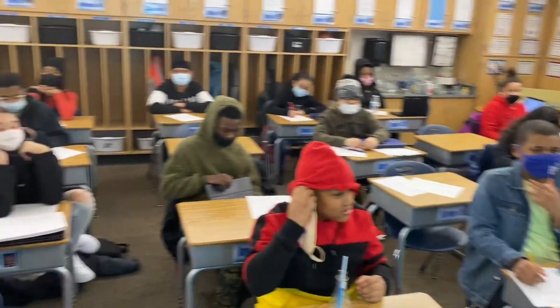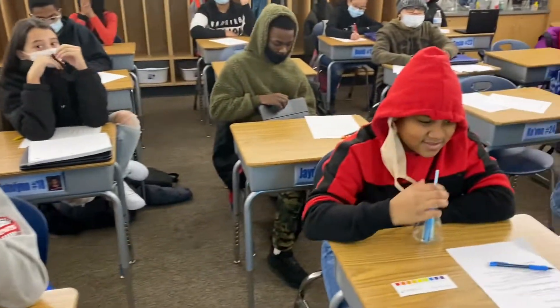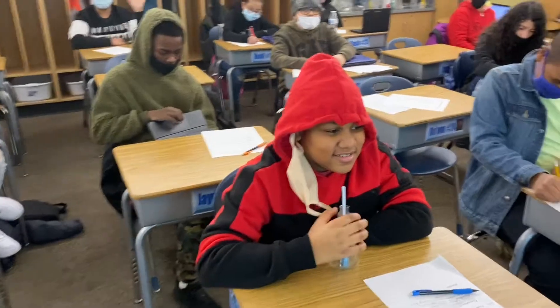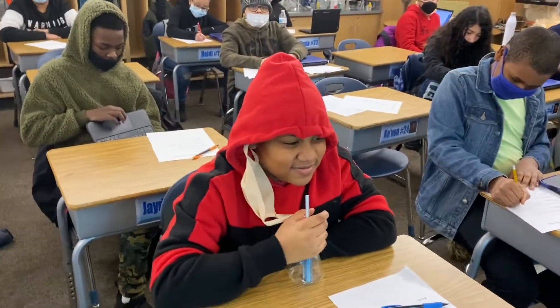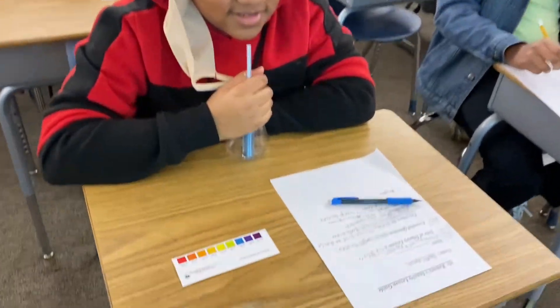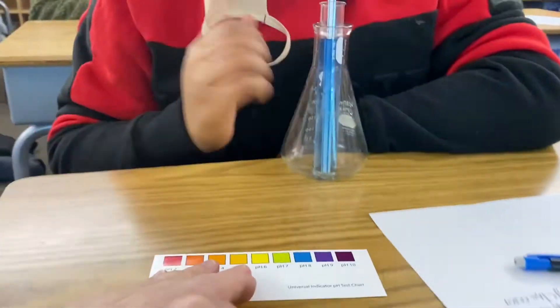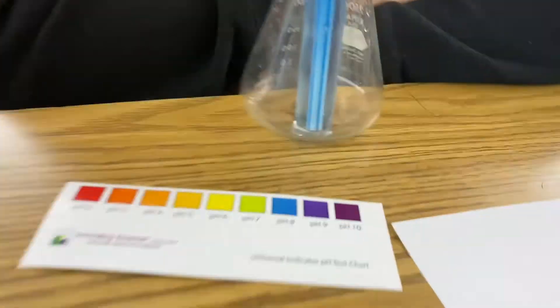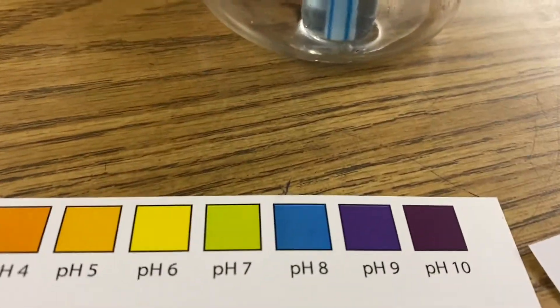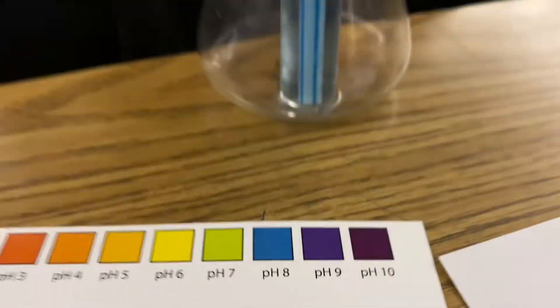Welcome back to Ramsey Land. Today we are performing the acid test and I'm here with Javion. He's got some tap water. We added some bromothymol blue and we can see that the tap water right now looks like it's about a pH of 8 — it's slightly alkaline.